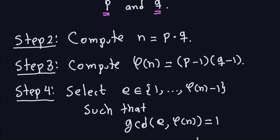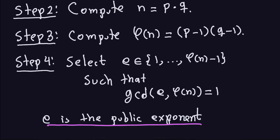So N is a product of two primes and is part of the public key, and E is also part of the public key — a number in the list {1,...,φ(N)−1} with gcd(E, φ(N)) = 1. E is the public exponent.